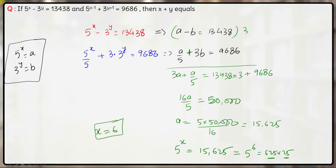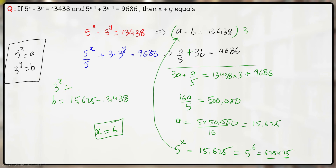So far we have figured out the value of x. Now let us substitute the value of 5 raised to the power x, which is 15,625, into the first equation. From there, b is equal to 15,625 minus 13,438, so b, which is 3 raised to the power y, comes out to be 2,187. Dividing 2,187 by 81 gives 27, so this is 3 raised to the power 4 times 3 raised to the power 3, which is 3 raised to the power 7. Hence the value of y comes out to be 7.